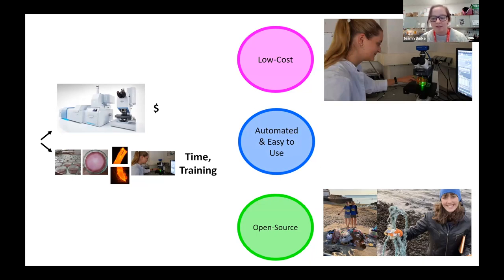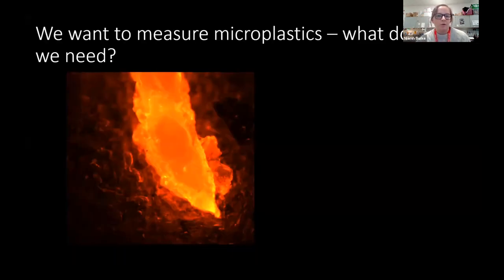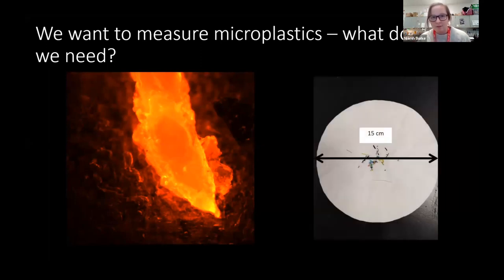So we're going to build a tool. What do we need? Usually when you're measuring microplastics, you'll label them with a fluorescent dye called Nile Red, and that just helps us to be able to see the plastics better because they're very small. We're going to need a fluorescence microscope to be able to see them, and then we need a motion system to scan over our samples.